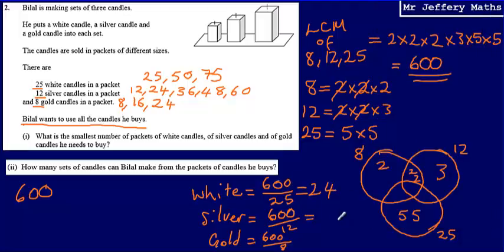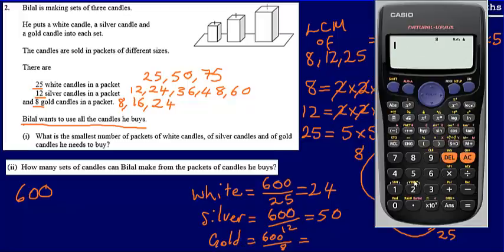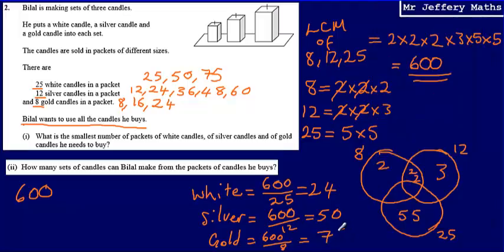600 divided by 25 is going to give us 24. 600 divided by 12 is going to give us 50. And then 600 divided by 8 is going to give us 75. So our final answer to part one is 24 packets of white candles, 50 packets of silver, and 75 packets of gold. And how many sets can Bilal make from the packets of candles he buys? Our answer there would be 600.